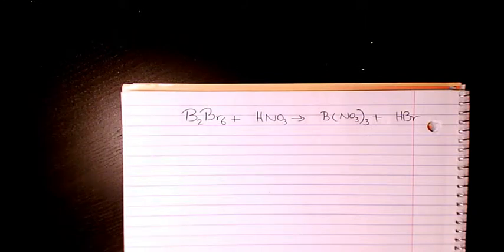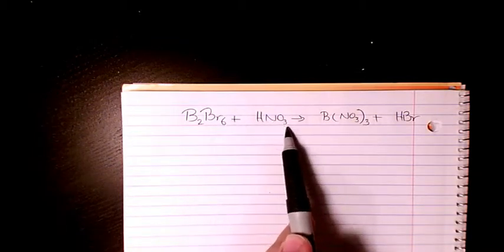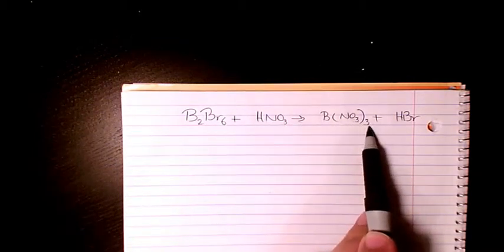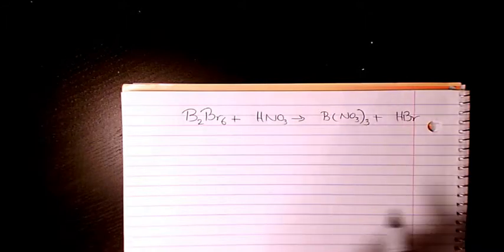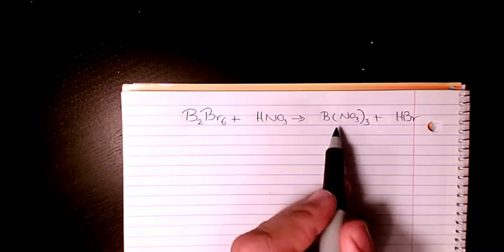What's up guys, welcome to my channel. In this video I want to show you how to balance this chemical equation. We have B2Br6 plus HNO3 gives B(NO3)3 plus HBr. So for balancing, I start with B.